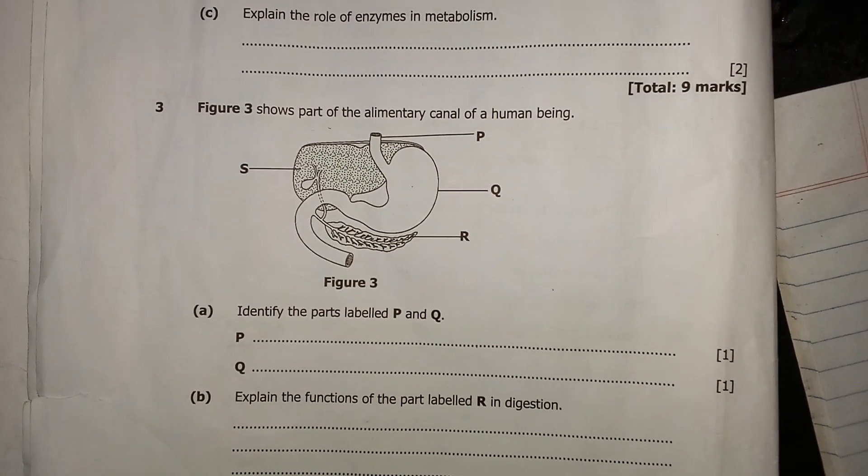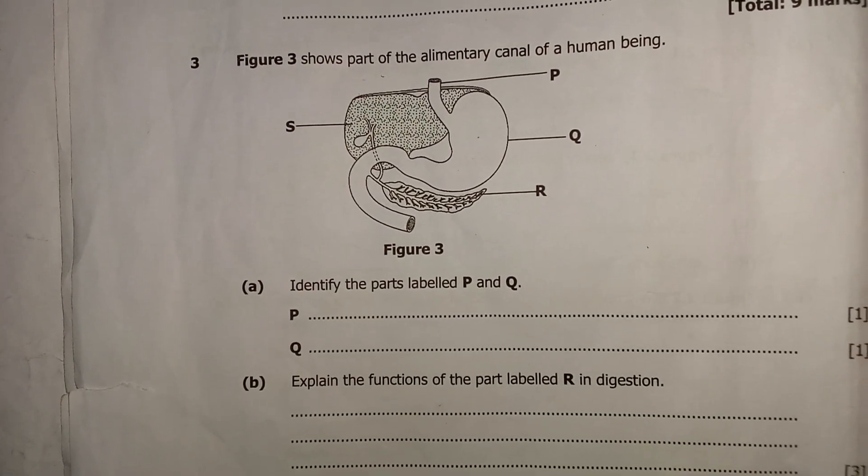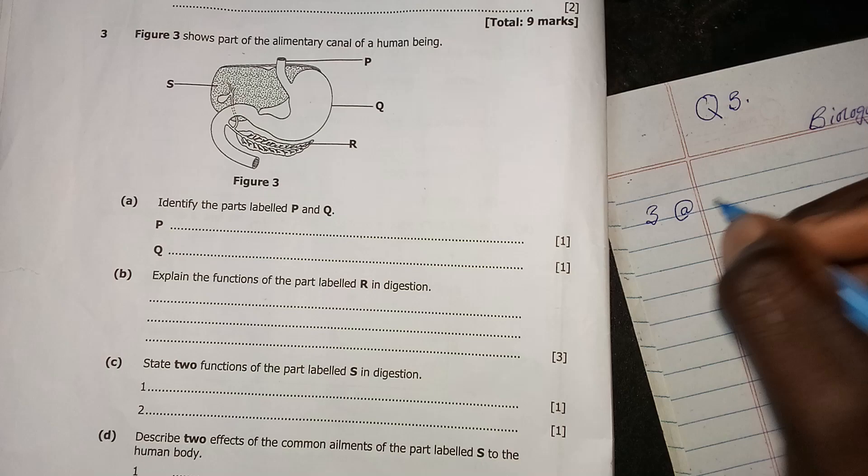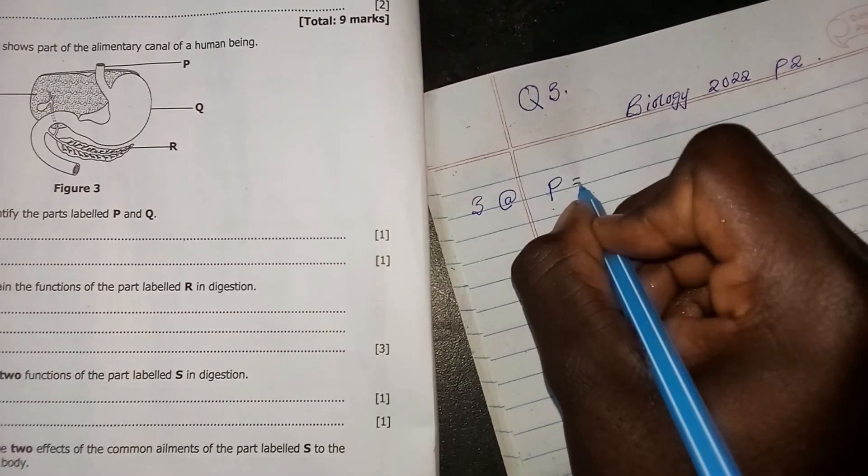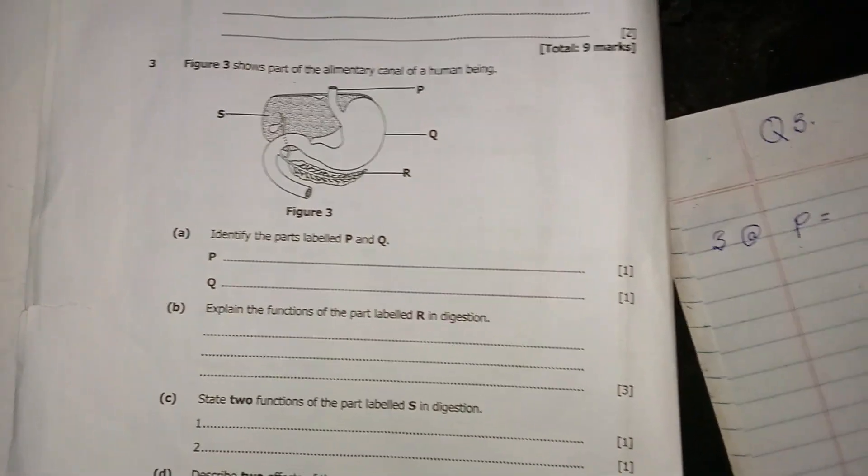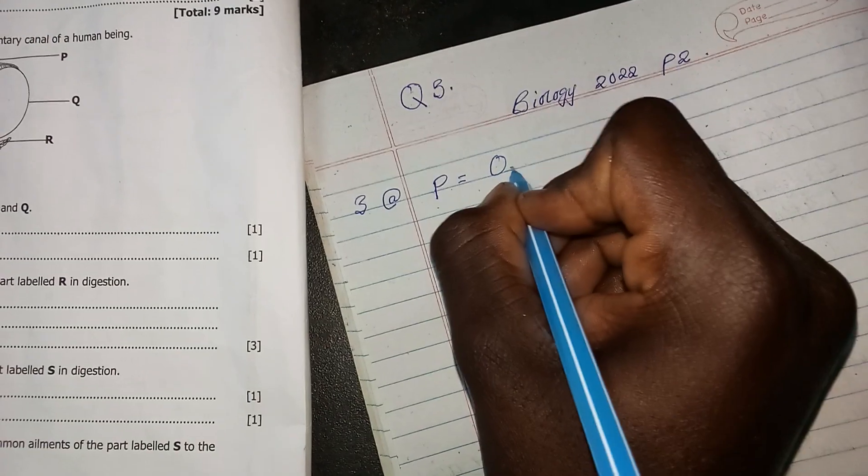If you are able to study these parts clearly, you can tell that the part labeled P is what is known as the esophagus.